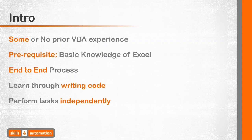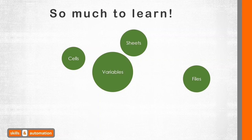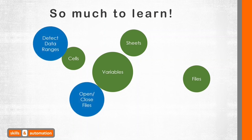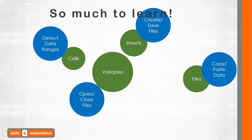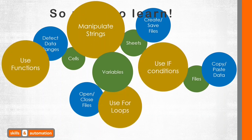In the next segment, we'll have a brief look at the concepts we're about to cover. We will start off with a bit of theory regarding the basics — how to refer to cells, sheets, and Excel files through code. We'll also learn how variables make our code more efficient and easier to read. Then we'll step up and start manipulating cells, sheets, and files: detecting data ranges, opening and closing files, copy-pasting data, and creating and saving new files. Next up is the intermediate level, where we start programming using logic — manipulating text strings, using if conditions, for loops, and functions such as Find.